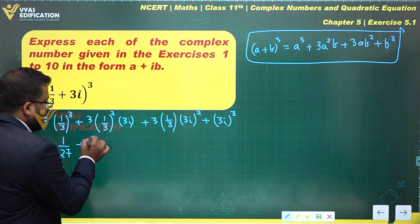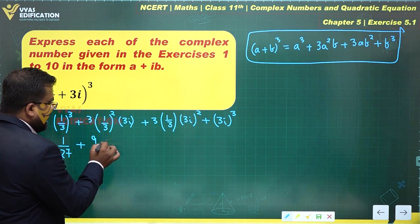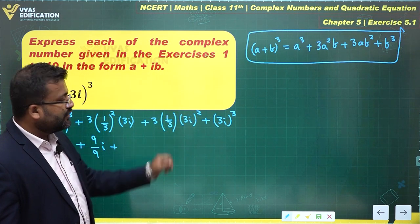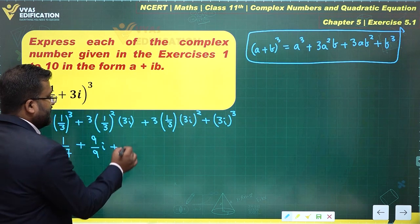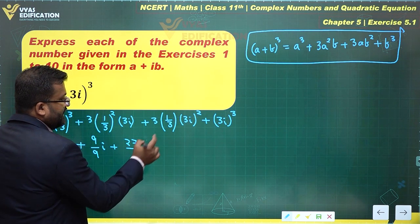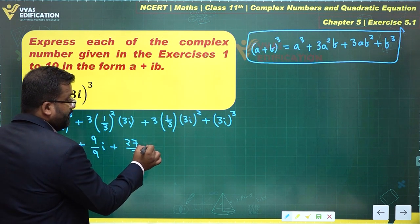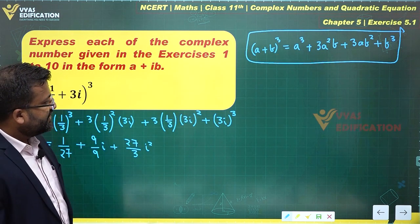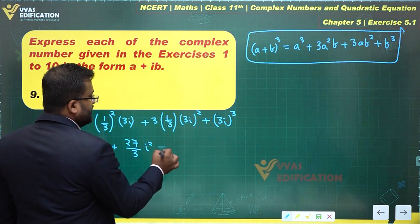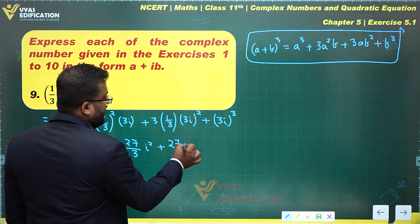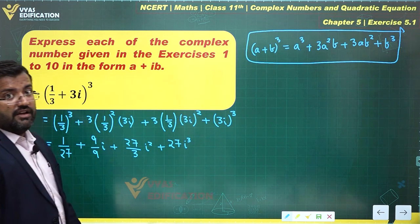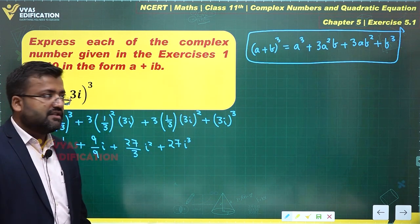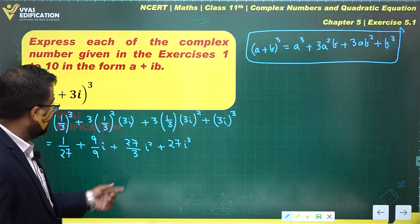Plus what is this? This is 3 times 3², which is 27 in the numerator, and in the denominator you have 3 times i². What next? This is 3³ times i³, which is 27i³. What is i² equal to? i² is simply equal to -1.